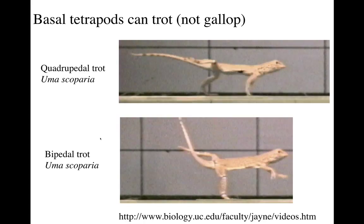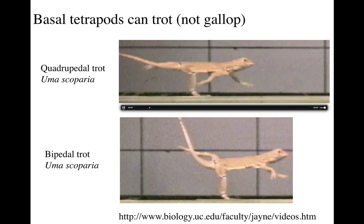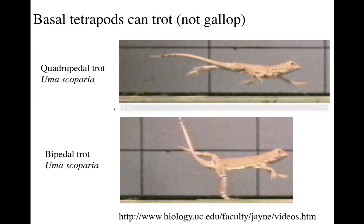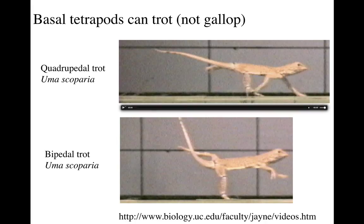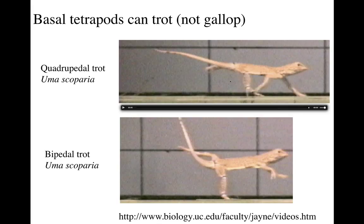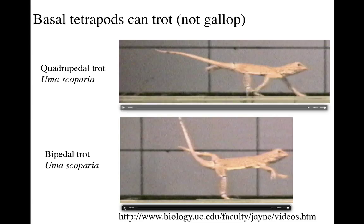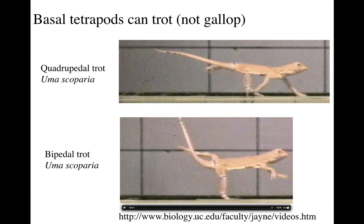These are some gaits. Basal tetrapods such as lizards can trot — trotting is a diagonally opposite gait, and this is a quadrupedal trot when the animal is running with all four limbs. You can see this is a beautiful running lizard, a desert lizard taken by my friend Duncan Irschick when he was in Bruce Jayne's lab as a postdoc. Running has an aerial phase — there's always a time during the limb cycle when all the limbs are off the ground. A lot of animals when they go really fast go bipedal, and this bipedal trot is pretty similar to how we ourselves would trot, except we don't lean forward so much because we don't have a big long tail to balance us.